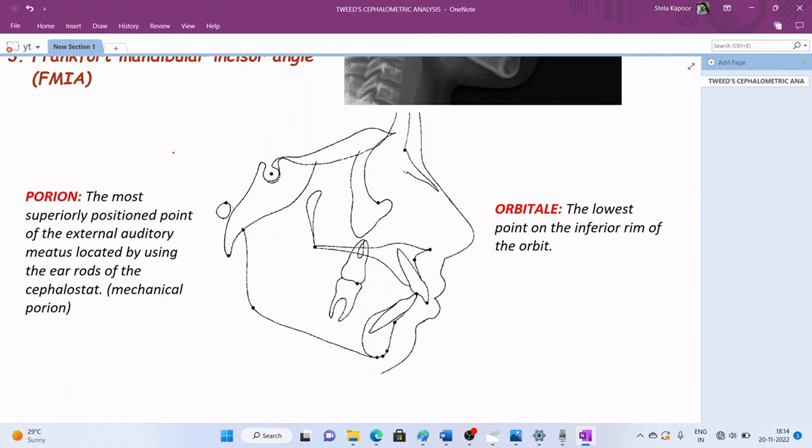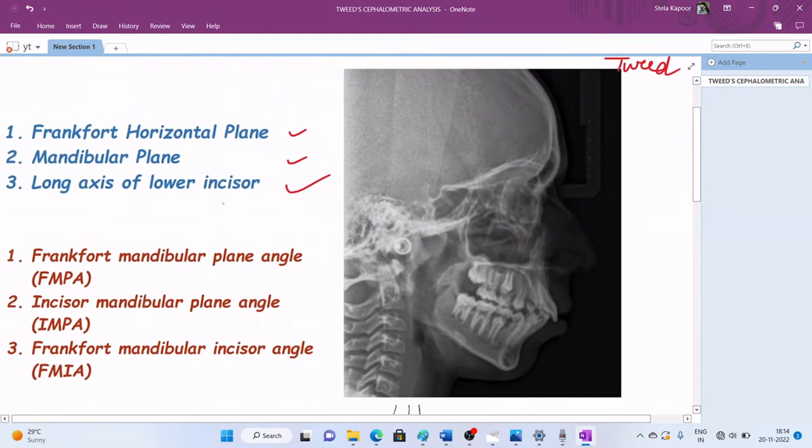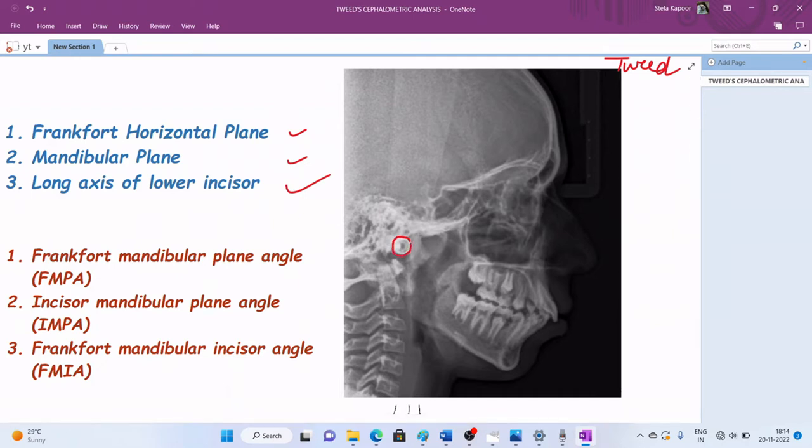Whenever we look at the cephalogram, we are able to make out the radiopaque ear rod, and the most superiorly positioned point on this is our porion. In this cephalogram, we can have a look at this radiopaque ear rod, and the most superior point is the porion.